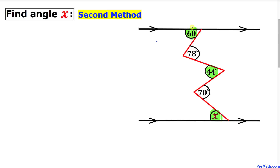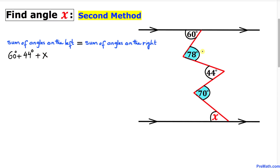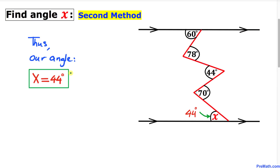For the second method, focus on the angles on the left-hand side of the transversal lines: 60 degrees, 44 degrees, and x degrees. Add them: 60 + 44 + x. Set this equal to the sum of angles on the right-hand side: 78 + 70 = 148 degrees. Subtracting 104 degrees from both sides gives x equals 44 degrees. Thus our angle x is 44 degrees. Thanks for watching, please subscribe for more videos.